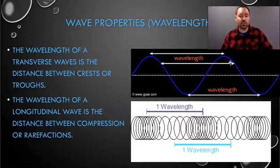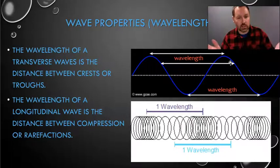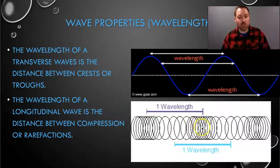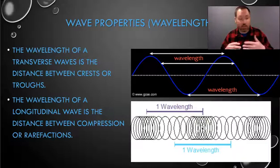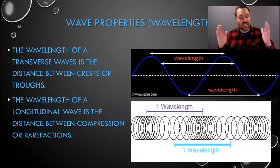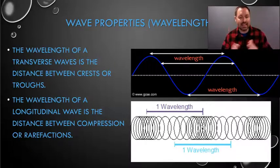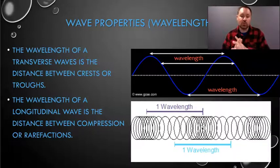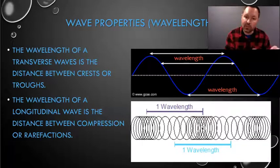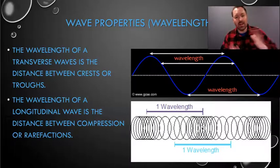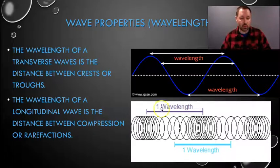When it comes to longitudinal waves, the wavelength is the distance between the compressions — the squishes. So in this case, we've got a squish here and a squish here. If you were to measure the distance, even with a ruler or a meter stick, the measurement of the distance between squishes, between compressions — that is the wavelength. So the wavelength looks a little bit different for transverse waves than it does for compressional or longitudinal waves.